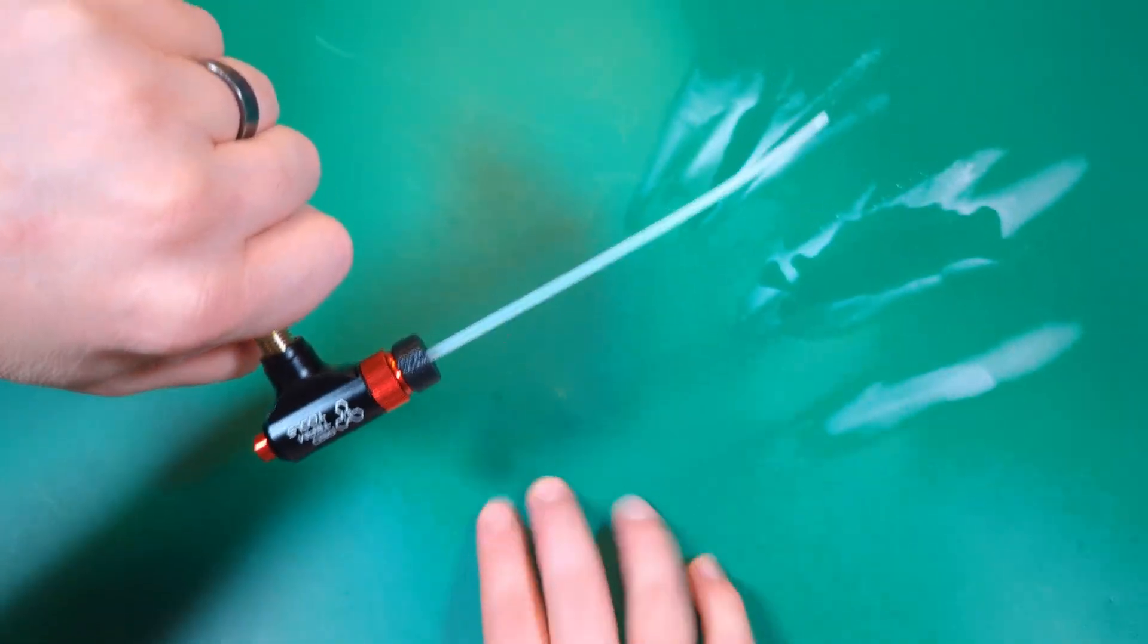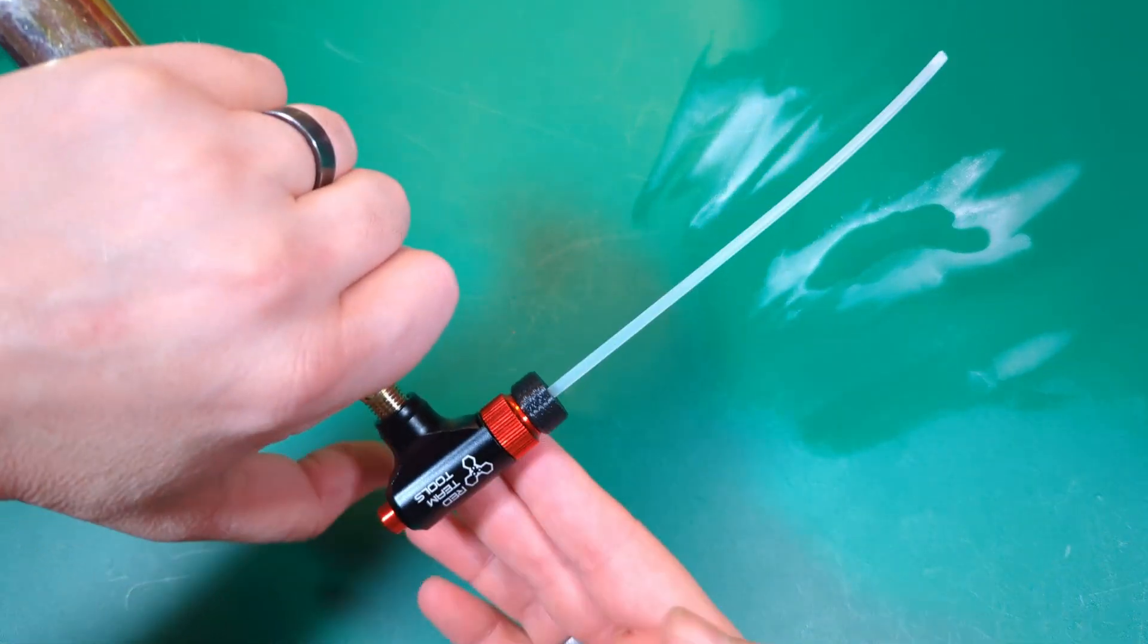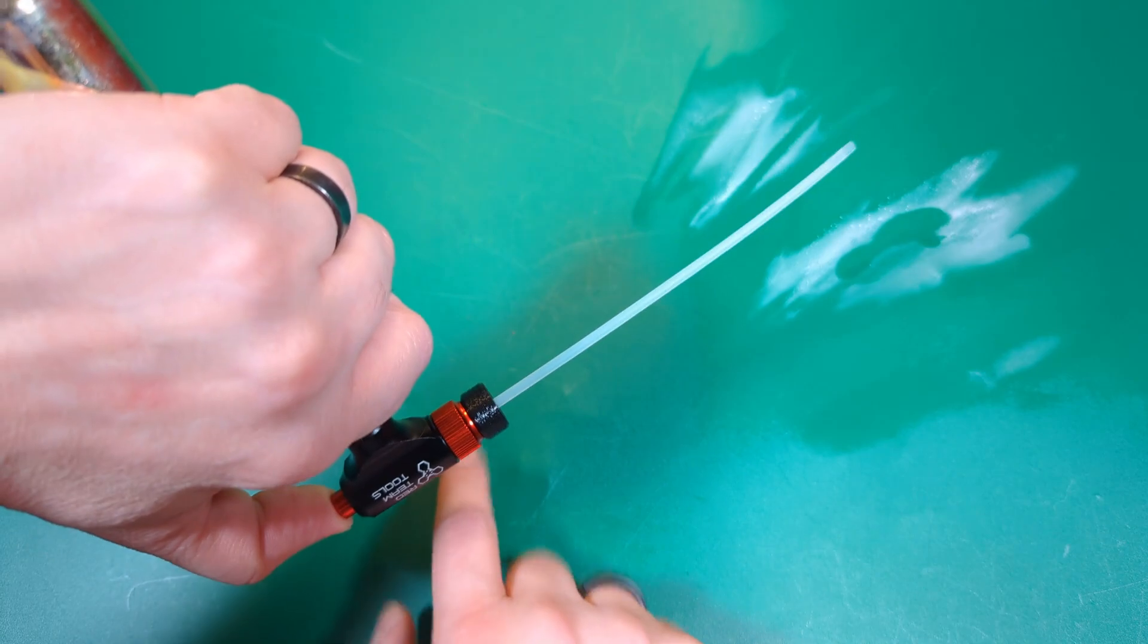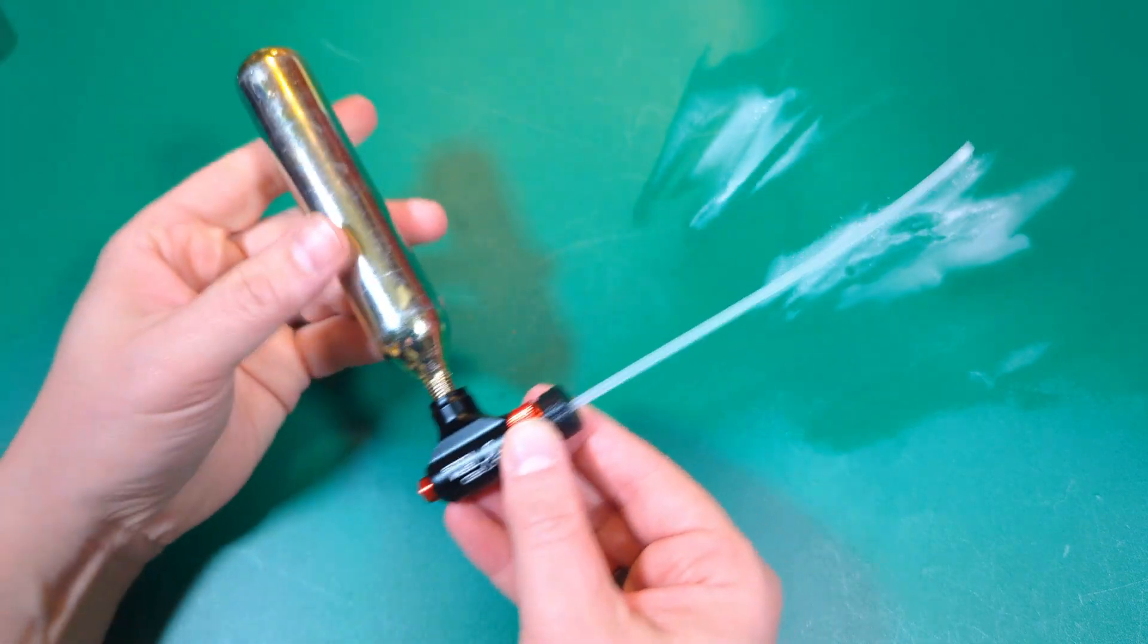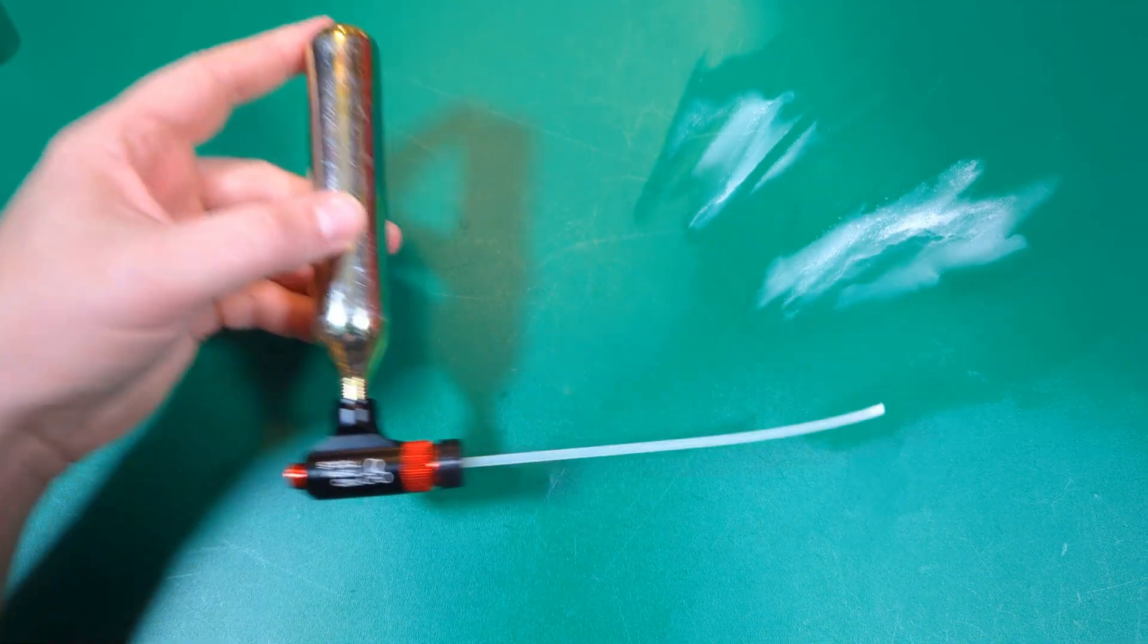You can see we're not getting any drops. Wow, this is really warping the surface of the table here. You can see, though, we're not getting any drops, any drips coming out down here. This is a great seal. You're going to get all of your gas delivered downrange exactly where you need it to be.